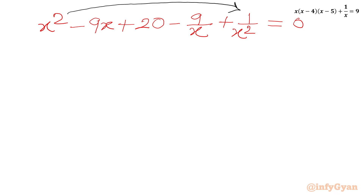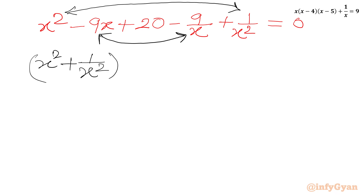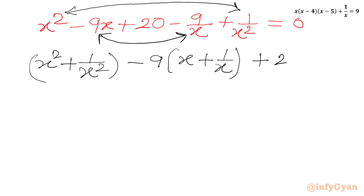Now I will group the first and last terms together, and the middle terms together. So I can write x squared plus 1 over x squared, then minus 9 times (x plus 1 over x), plus 20, equal to 0.